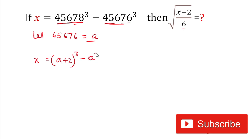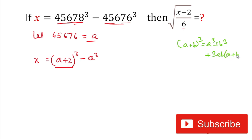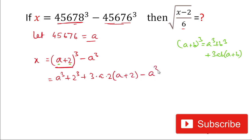This is in the form of (a plus b) whole cubed. The formula for (a plus b) cubed is a cubed plus b cubed plus 3ab times (a plus b). Here a is a and b is 2, so we write: a cubed plus 2 cubed plus 3 times a times 2 times (a plus 2), minus a cubed.